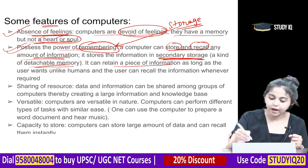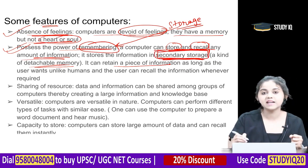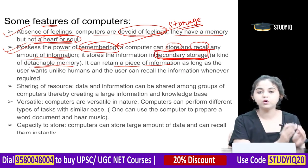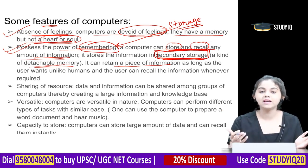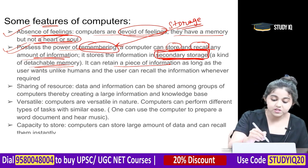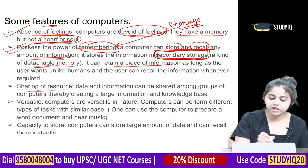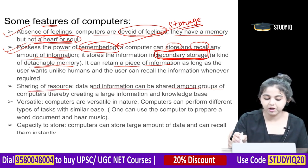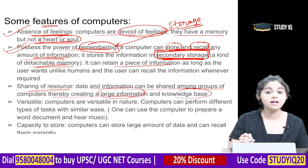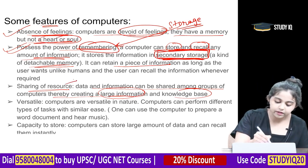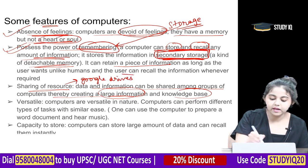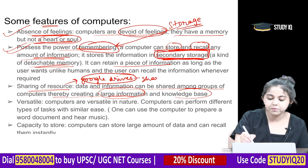The secondary storage is where all data is put and can be retrieved whenever required. Another feature is sharing of resources — data and information can be shared among groups of computers, creating a large information and knowledge base. Today, Google Drives are also used for the same purposes of sharing.